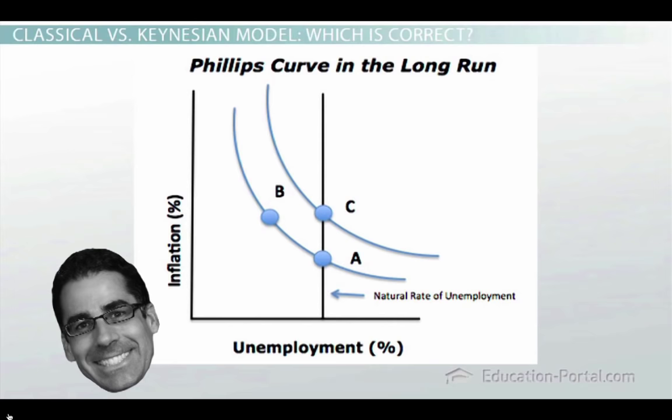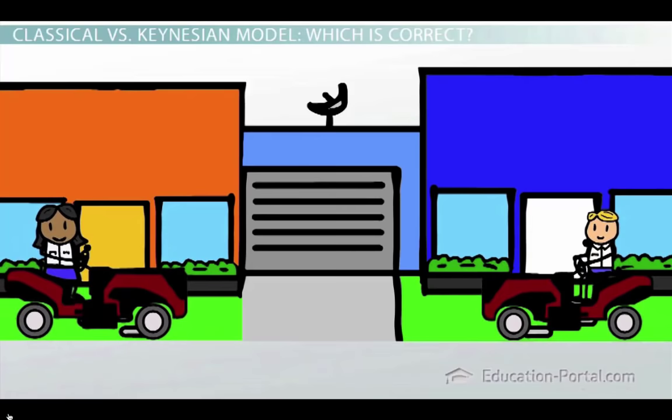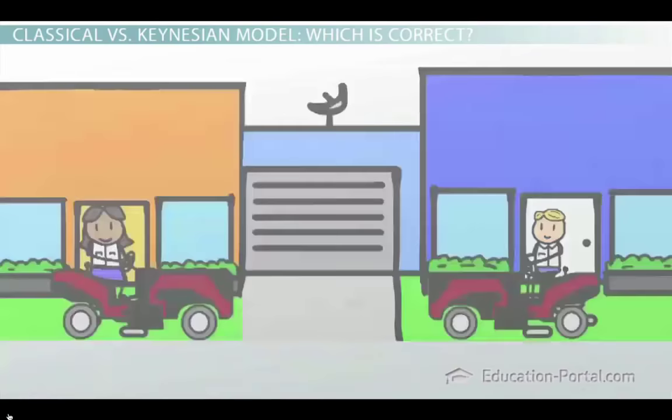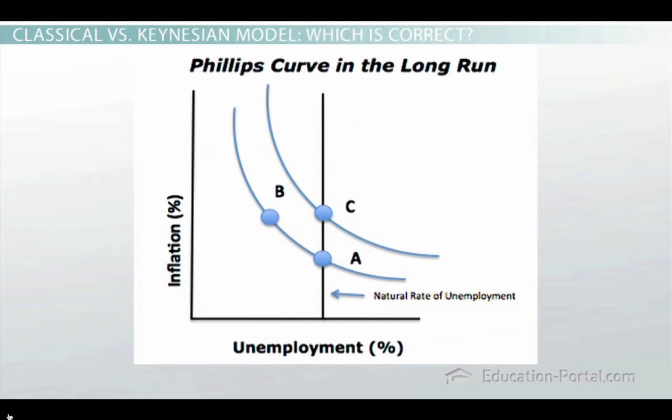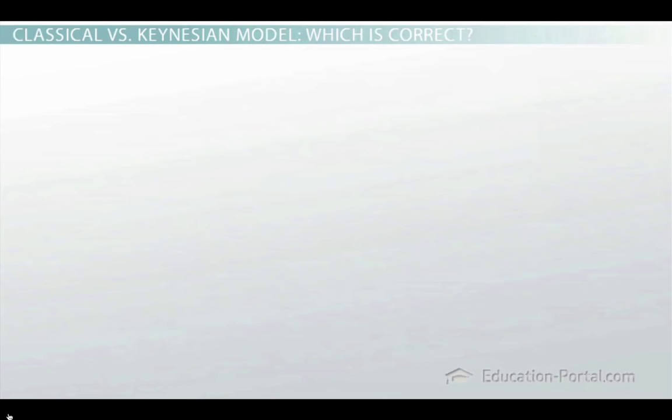So we have two models of economic growth. The classical model says that the economy is at full employment all the time and that wages and prices are flexible. The Keynesian model says that the economy can be above or below its full employment level and that wages and prices can get stuck.